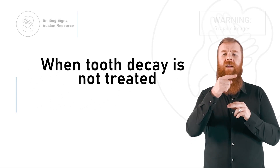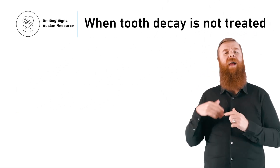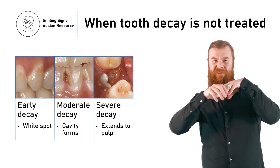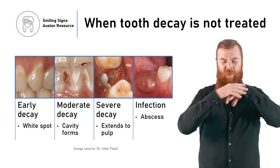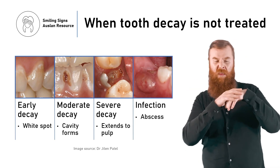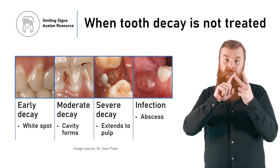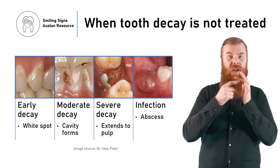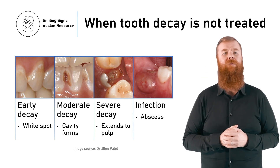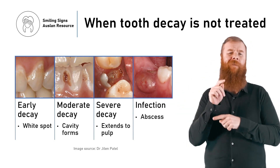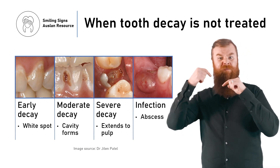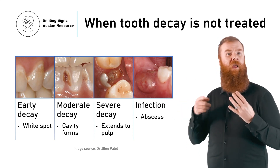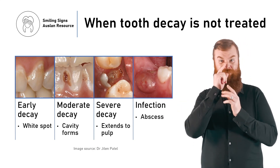The next few slides have some graphic images. We will discuss what happens if tooth decay is not treated. Tooth decay starts as a white spot on the tooth. If the tooth decay is not treated, it can make a hole in the tooth. If the hole is not treated, the decay can get bigger and the tooth may become sore or even break. If the decay gets into the tooth's nerve or pulp, the germs can cause an infection. Tooth decay often does not cause pain until it's severe, so you might not even know that you have it.